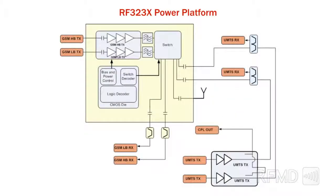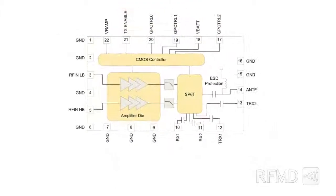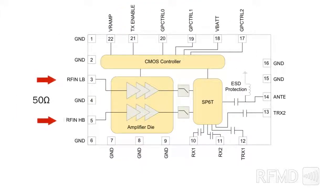These modules are the core of RFMD's RF3230X power platform and include 50 ohm matched input and output ports, eliminating the need for external PA to antenna switch module matching components.